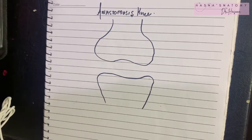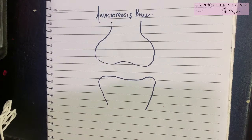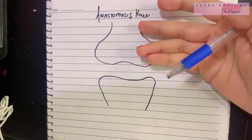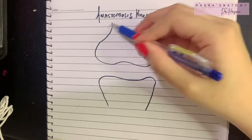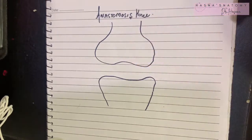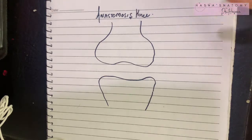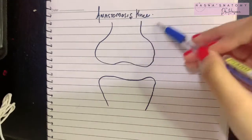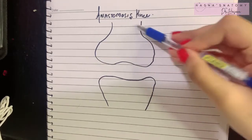Assalamu alaikum, this is Dr. Hasna with another video of Hasna's Anatomy. Today we'll be discussing the topic of the anastomosis around the knee joint. Before we begin, let me recall that anastomosis is basically a channel connecting a group of vessels with each other, providing collaterals in case one vessel gets blocked.